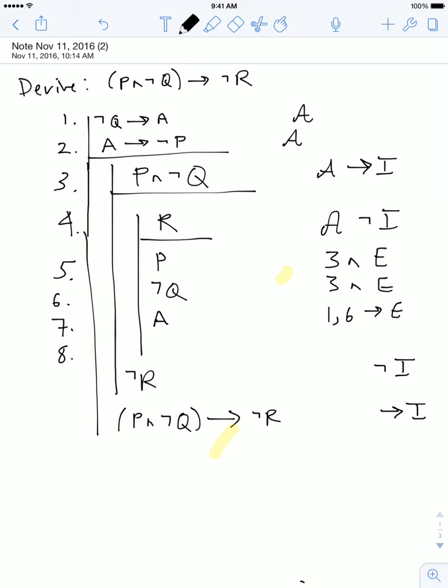And then line 8 is going to be not P. And we get that because we have the antecedent of this conditional. So I can use lines 1 and 7 and conditional elimination. Now what I've done here is beneath the scope of R, I have derived both P and its negation.